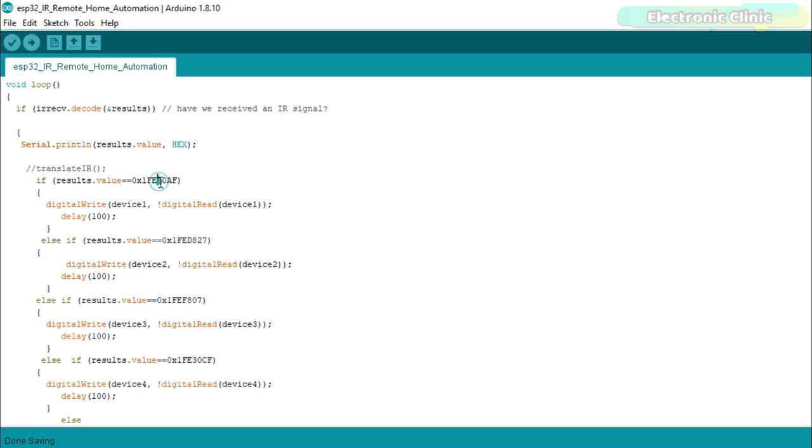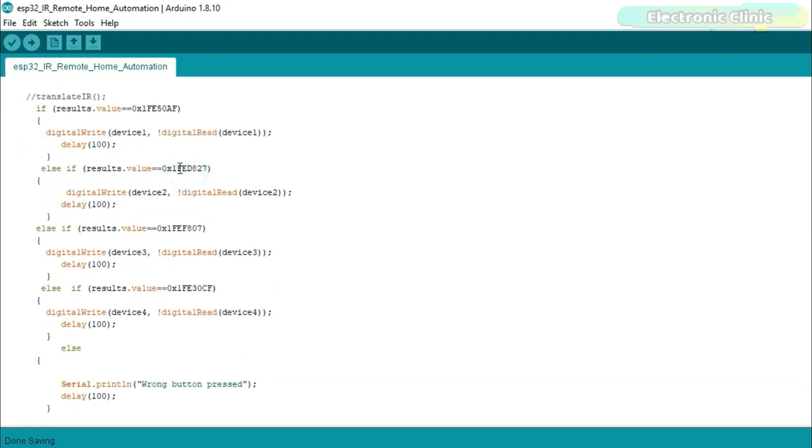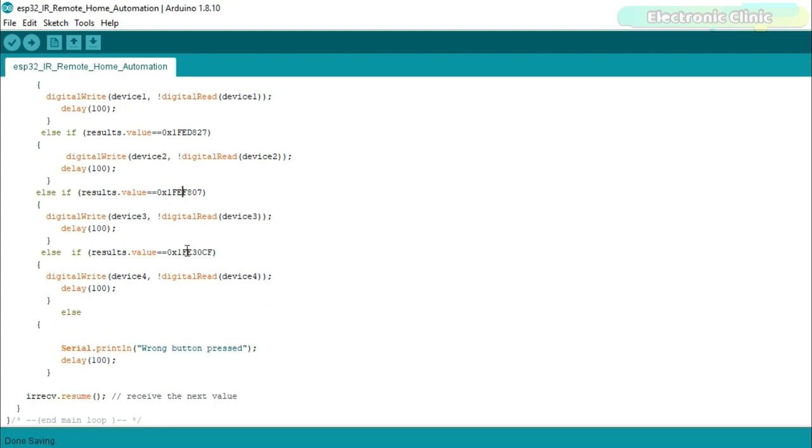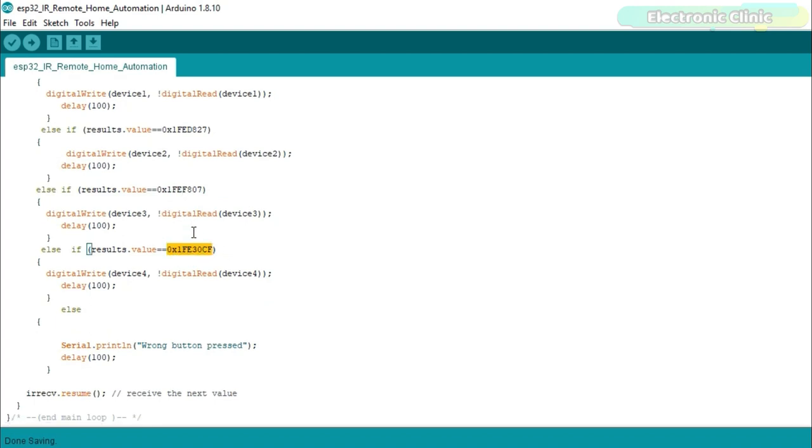This is the code of button number one. This is the code of button number two. This is the code of button number three. And this is the code of button number four. If you want to use button number five, then simply open the serial monitor, press button five on the IR remote. Do it at least four to five times to confirm the code. Then copy that code and write another if condition. It's just that simple.